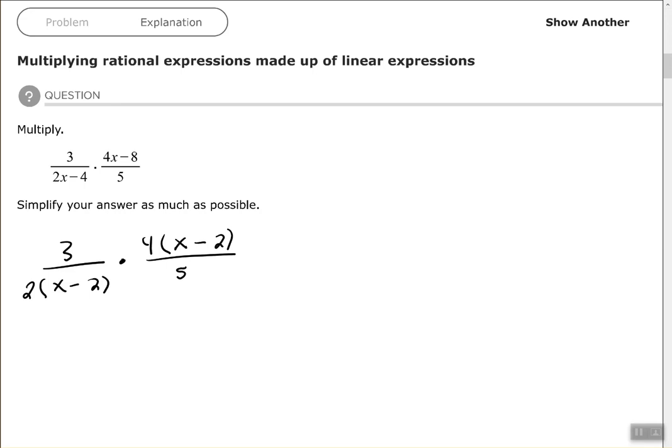Again, you can leave it like this and simplify, or you can put it in one fraction. Last time we put it into one fraction; this time I'm going to leave it like this just so you can see the difference. As long as you have a common factor with your numerator and denominator, you can simplify. So x minus 2 with an x minus 2, and then I also see that I can simplify the 2 and the 4.